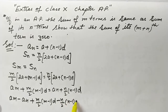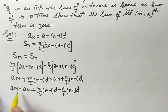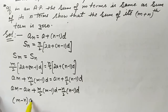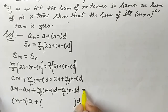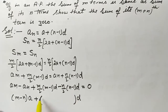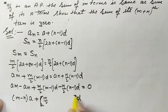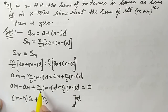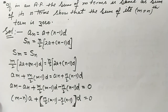Taking 'a' common from the first two terms gives a(m−n). Then taking 'd/2' common from the remaining terms, we get inside the bracket: m(m−1) − n(n−1). This entire expression equals zero.